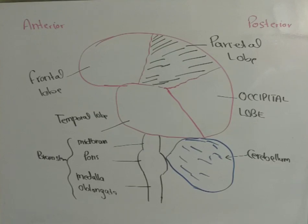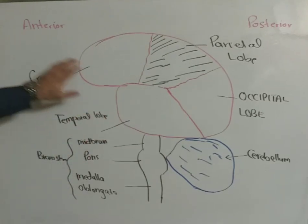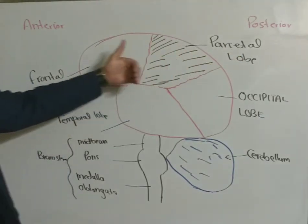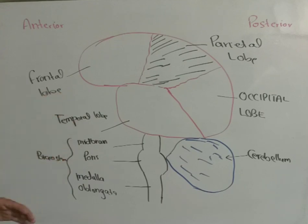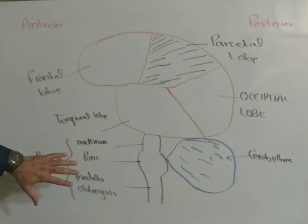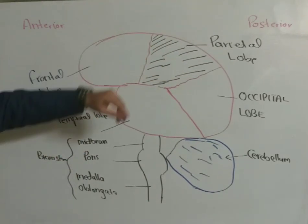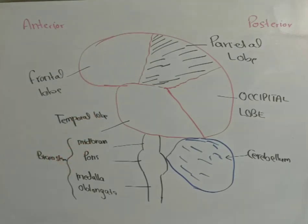Before we go into the detailed discussion about brain tumors, let's talk a little bit about the anatomy of the brain. This is the anterior side of the brain and this is the posterior side — as if you are taking the sagittal view, looking at the brain from the side. The superior most part of the brain is the cerebral cortex, also known as the forebrain, and it is divided into four major lobes.